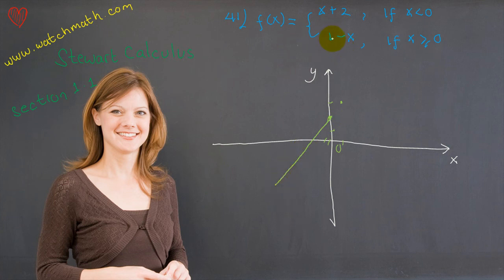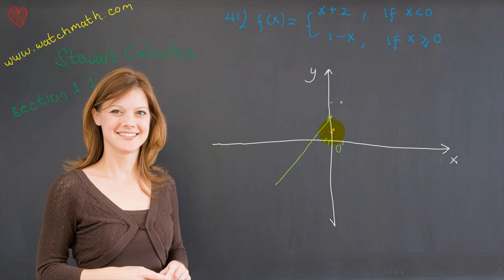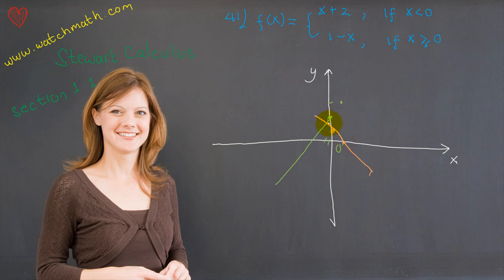By the same reasoning, first sketch the graph of 1 minus x. Plugging in x equals 0 gives the point (0, 1) on the graph, and plugging in x equals 1 gives the value 0, so we have the point (1, 0). We know that the line looks something like that. But f(x) equals 1 minus x only for x greater than or equal to 0, so we need to erase the part where x is less than 0 and only keep that portion.